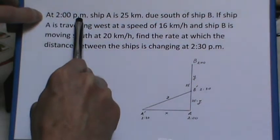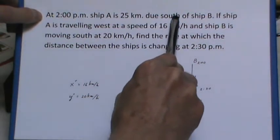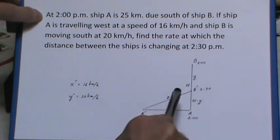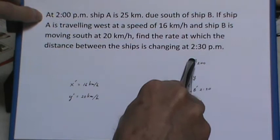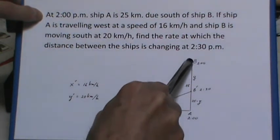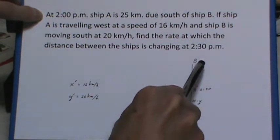At 2 p.m., ship A is 25 kilometers due south of ship B. So I've got ship A south of ship B and I've marked the 25 along here, and that's at 2 o'clock.